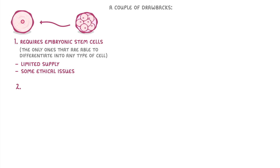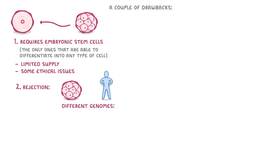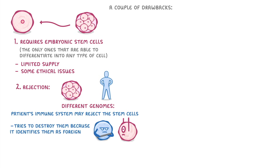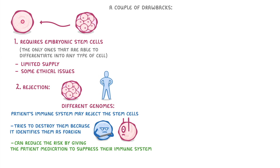The second drawback is the idea of rejection. Because the embryo and the patient have different genomes, the patient's immune system may reject the stem cells — it tries to destroy them because it identifies them as foreign. We can reduce the risk of this by giving the patient medications to suppress their immune system, but it doesn't always work and often has side effects.